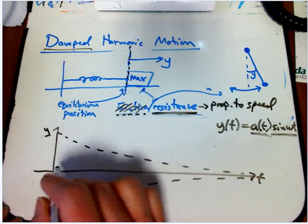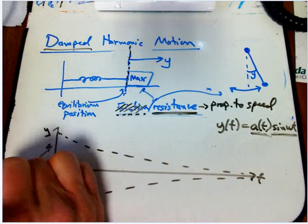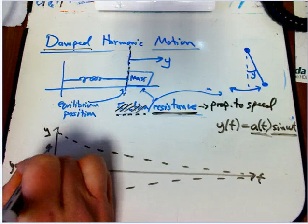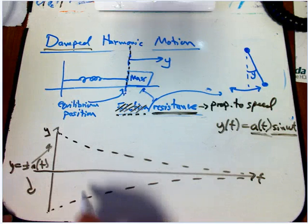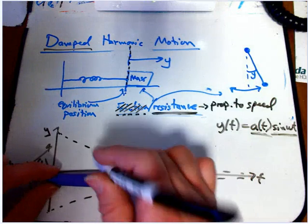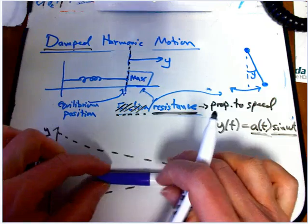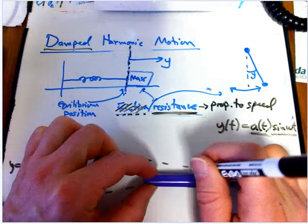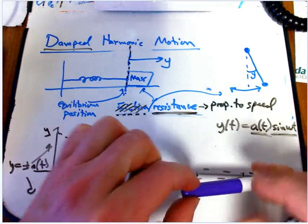We're going to draw y equals plus or minus a of t. Then we're going to draw the sine in between. To be nice and careful, let's say... to make sure the zeros are kind of lined up here.